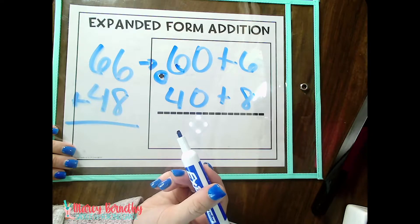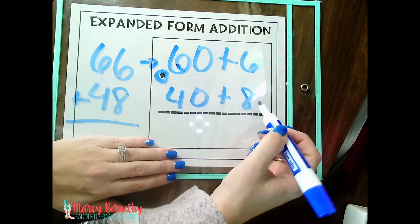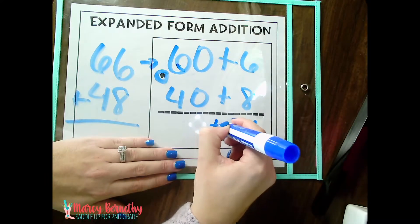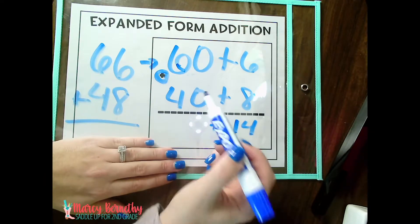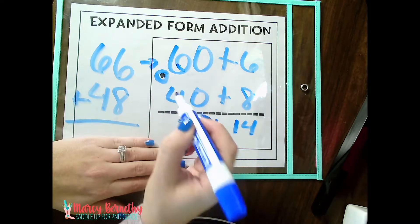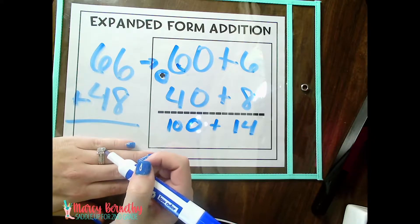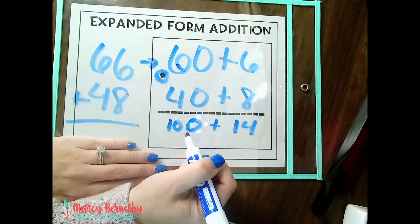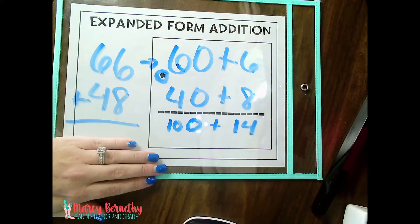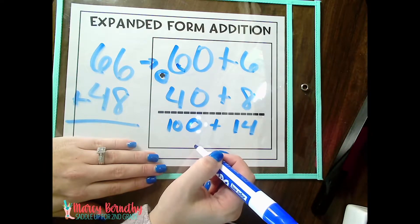When we add multi-digit numbers, we still always start with the ones place first. So we have 6 plus 8 equals 14 plus 60 plus 40 is 100. So now we have 100 plus 14. So you can see it is one extra step, but it's taking that regrouping aspect away.